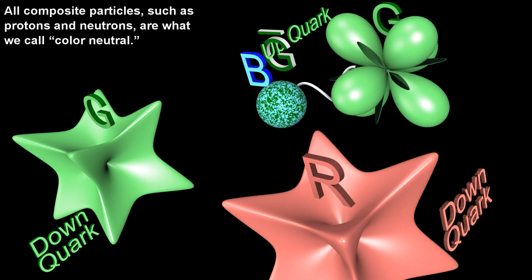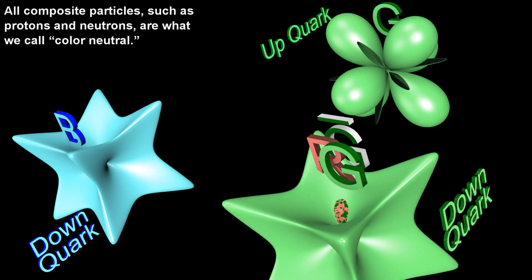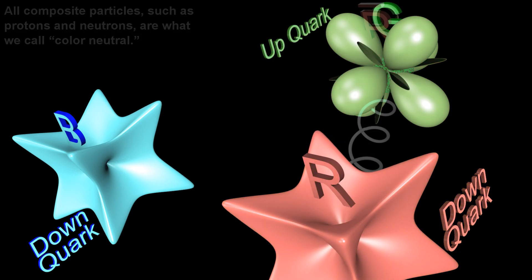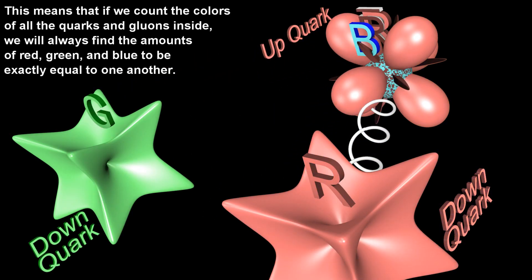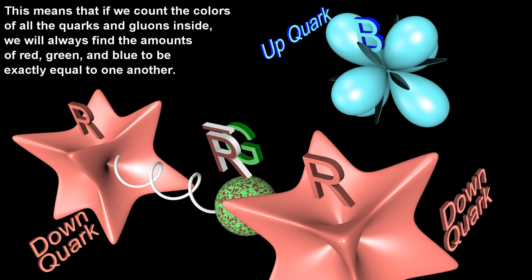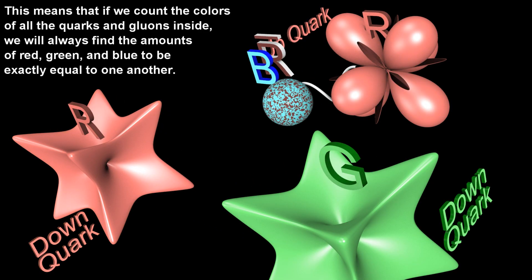All composite particles, such as protons and neutrons, are what we call color neutral. This means that if we count the colors of all the quarks and gluons inside, we will always find the amounts of red, green, and blue to be exactly equal to one another.